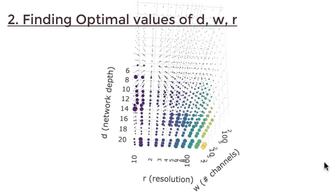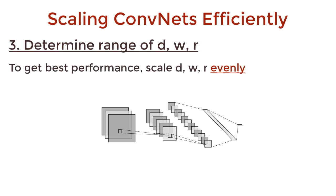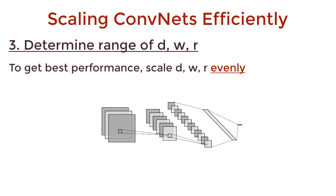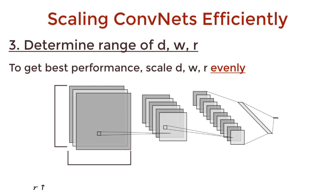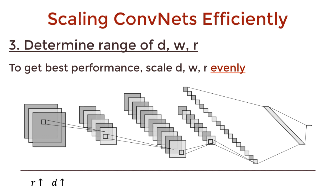Now on to part three: how do we determine the ranges for the scaling values? To get the best performance, we should scale D, W, and R evenly. This makes sense intuitively too. If the layers have a larger length or depth — so that's higher R — then we need a deeper network to ensure every neuron is influenced by the later layers. We also need more channels per layer to ensure that we capture the necessary features in the enlarged input. So that means we need to increase W and D as well.